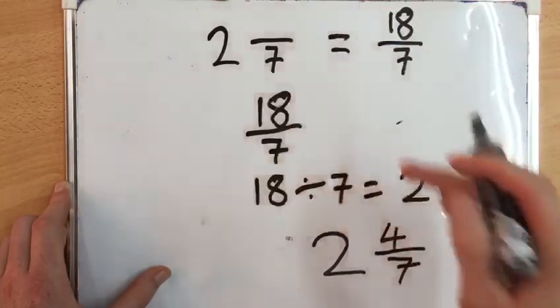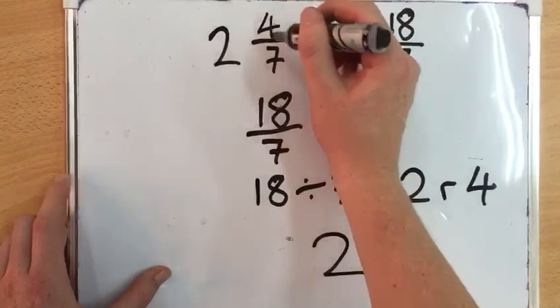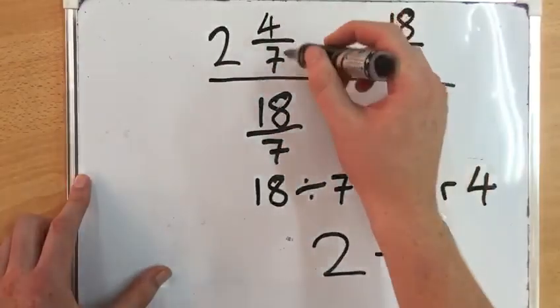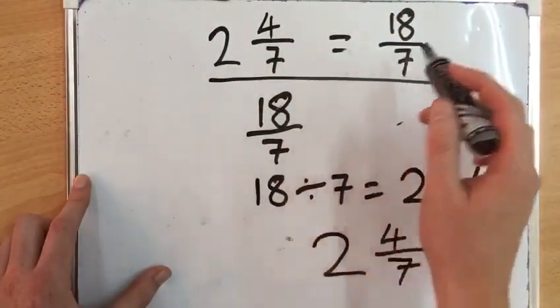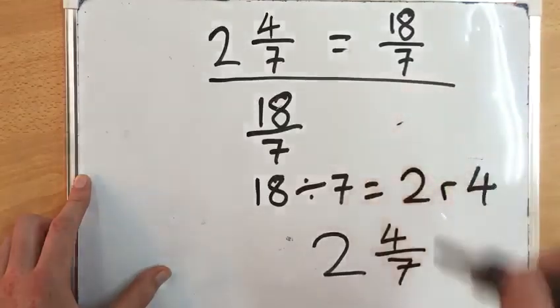We then fill in our missing answer, which is 4. Therefore, 2 and 4/7 equals 18/7.